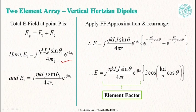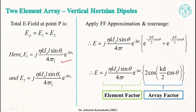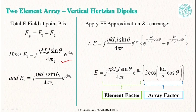What has happened is the original field of the dipole has been doubled, which we expect since we have two dipoles driven with the same amplitude and phase. Secondly, there is a multiplication factor, and this multiplication factor of 2 cos(kd/2 cos(theta)) is called the array factor. The original element pattern, that is the element factor, is now modified by multiplying by a factor called the array factor.